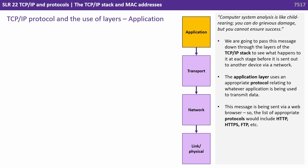Let's look at a message being sent from one system to another and how it passes down through the various layers of the TCP/IP stack on the way out and then back up on the way in. The application layer is first and it uses an appropriate protocol relating to whatever application is being used to transmit the data.